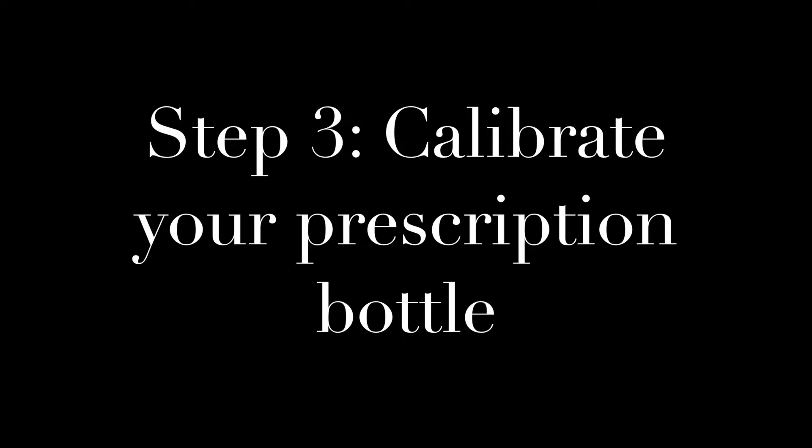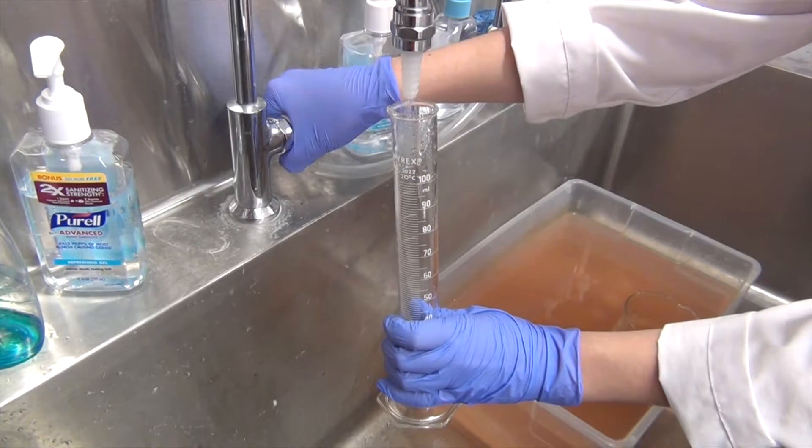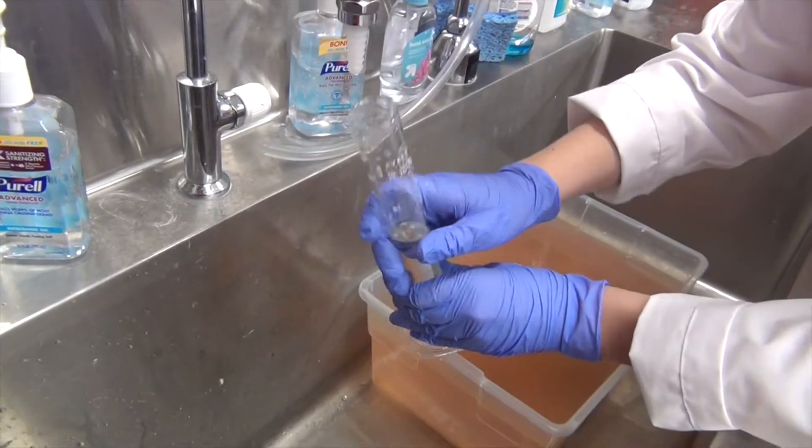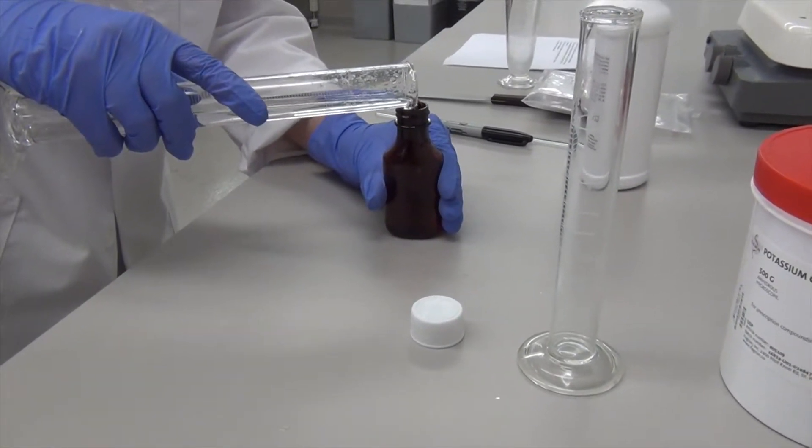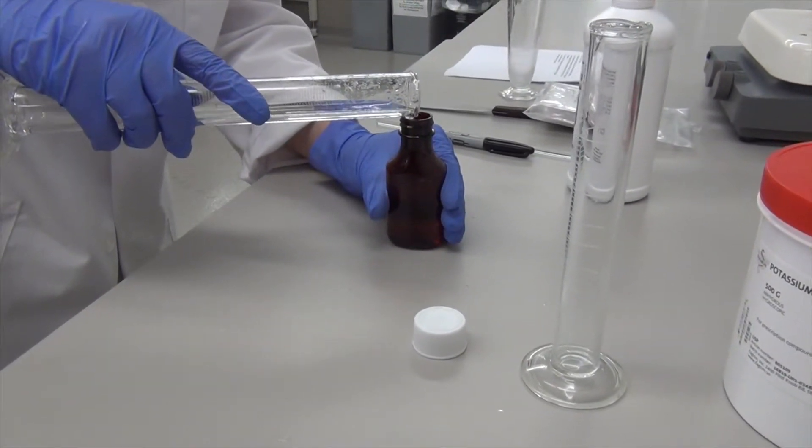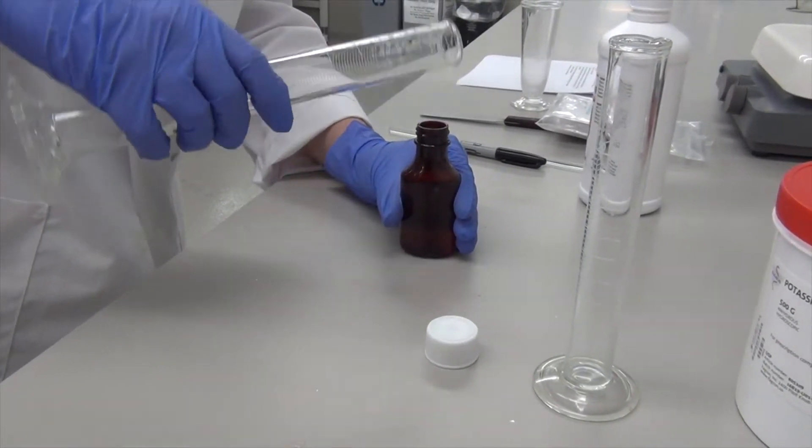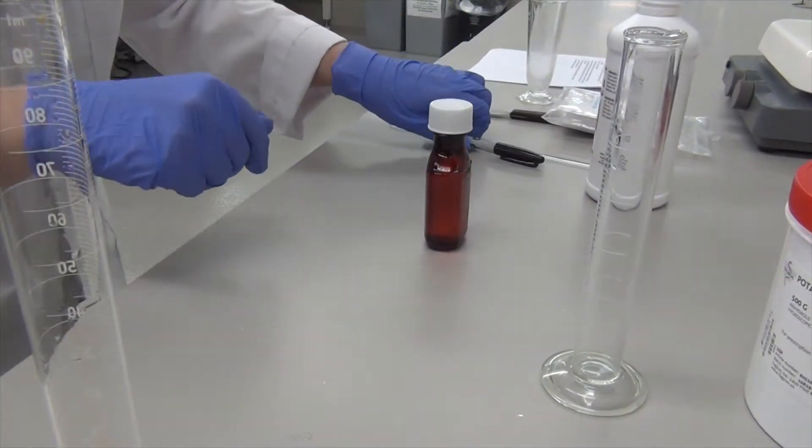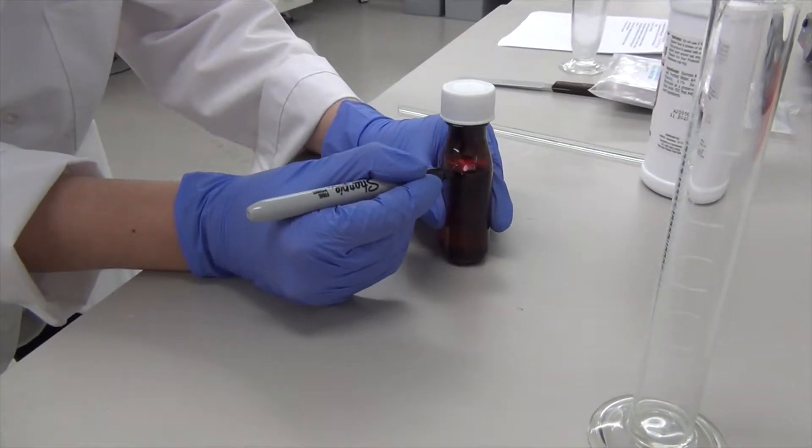Step three is calibrating your prescription bottle. Since this prescription calls for a final solution volume of 60 milliliters, you will fill a graduated cylinder with 60 milliliters of DI water. You will then pour the water into your amber bottle. And finally, you will mark the water line using a black sharpie. This is where your final solution volume should come up to.